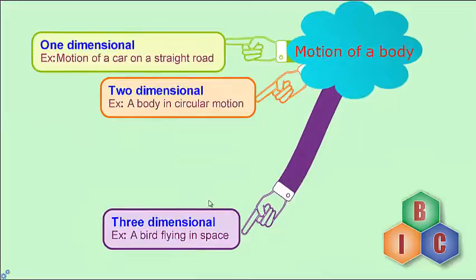The third type of motion is three-dimensional motion, which occurs in space. In three-dimensional motion, all three coordinates of the body — x-coordinate, y-coordinate, and z-coordinate — will change with respect to time. A mosquito flying in a room, a butterfly flying in a garden, or a bird flying in space are all examples of three-dimensional motion.